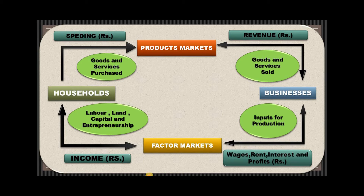Income and output are flow concepts — they are measured over a span of time. Looking at the flow chart, the flow of incomes from businesses to households and vice versa will continue as a stable and equilibrium magnitude if income received is utilized or spent at the same rate and if there is no leaking of funds or resources out of the flow.